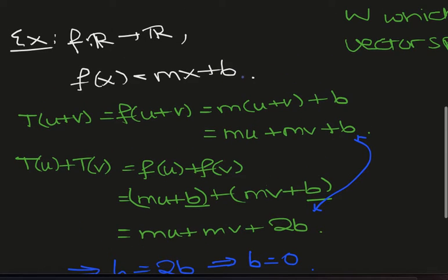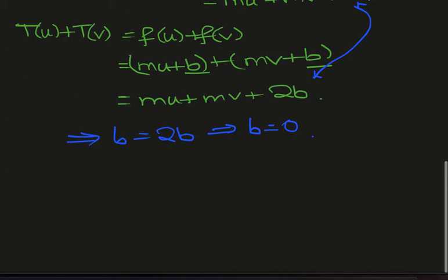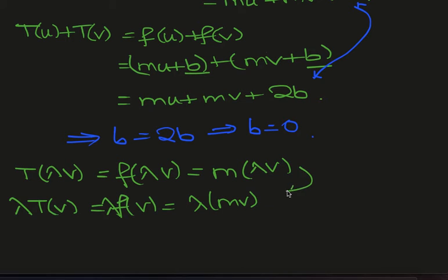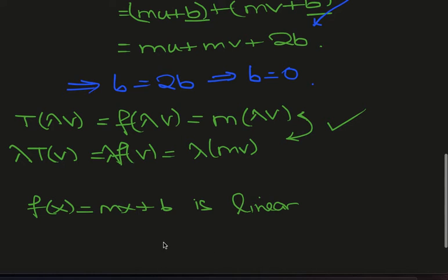So now let's work with the map F(x) = mx and we need to check that T(λv) = λT(v). So T(λv) is F(λv), and that's simply m(λv). Now if we look at λT(v), then we see that this is just λF(v), which is λ(mv), and these are equal. So if you want the map F(x) defined by mx + b to be linear, then that's true if and only if b equals 0.